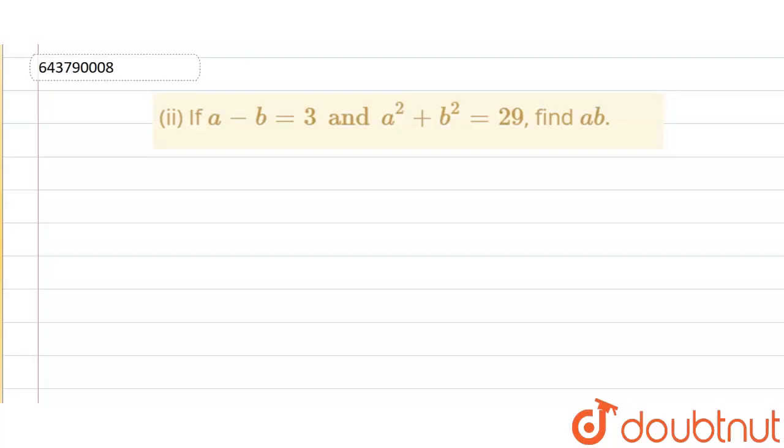Hello welcome to Doubtnet. The question that was given to us was if a minus b is equals to 3 and a square plus b square is equals to 29, so we have to find the value of ab.